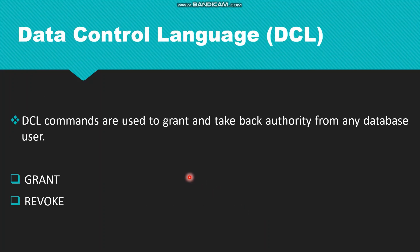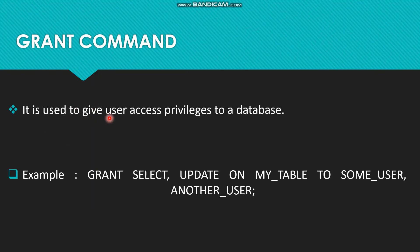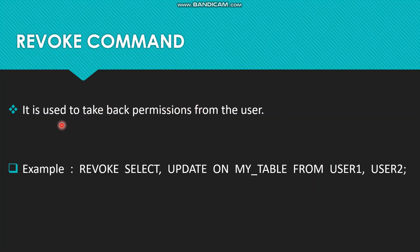Then we have Data Control Language — DCL. DCL commands are used to grant and take back authority from any database user. We have two commands: GRANT and REVOKE. The GRANT command is used to give user access privileges to a database. Example: GRANT SELECT, UPDATE ON my_table TO user1, user2. The REVOKE command is used to take back permissions from the user. Example: REVOKE SELECT, UPDATE ON my_table FROM user1, user2.